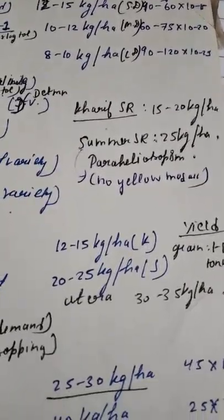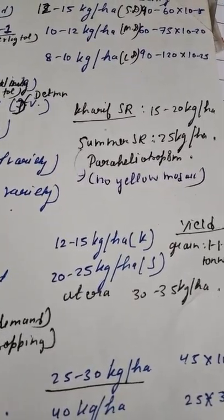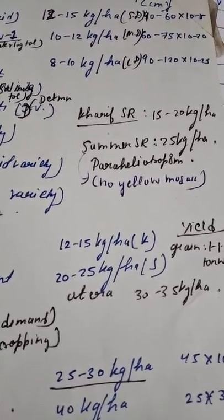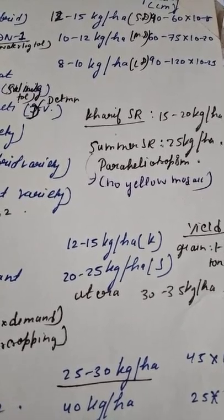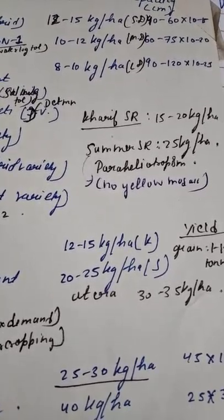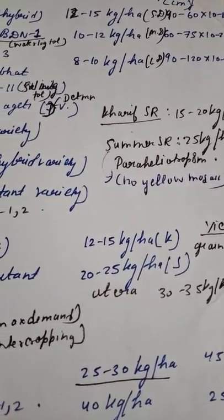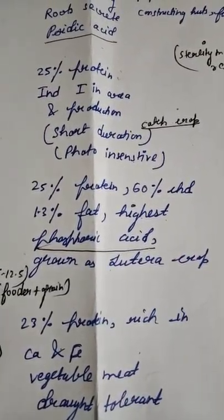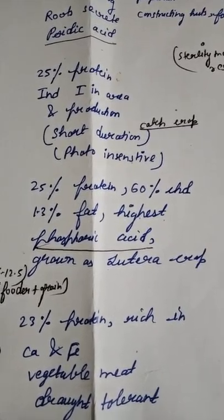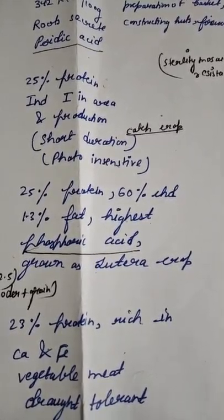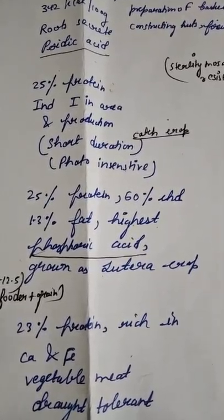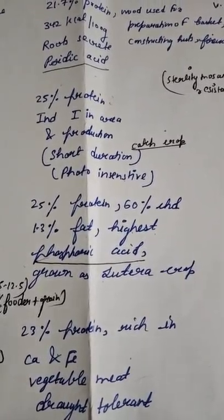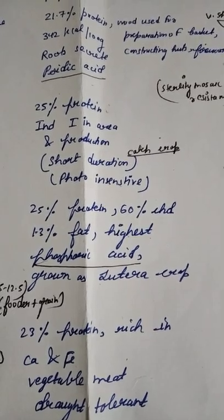Moong bean also shows paraheliotropism — its leaves have orientation parallel to sun rays. This is an important property found in green gram or moong bean. Black gram contains the highest oxalic acid. Black gram (urad/mash) is also grown as an utera crop (relay crop). Both green gram and urad are used as utera crops.